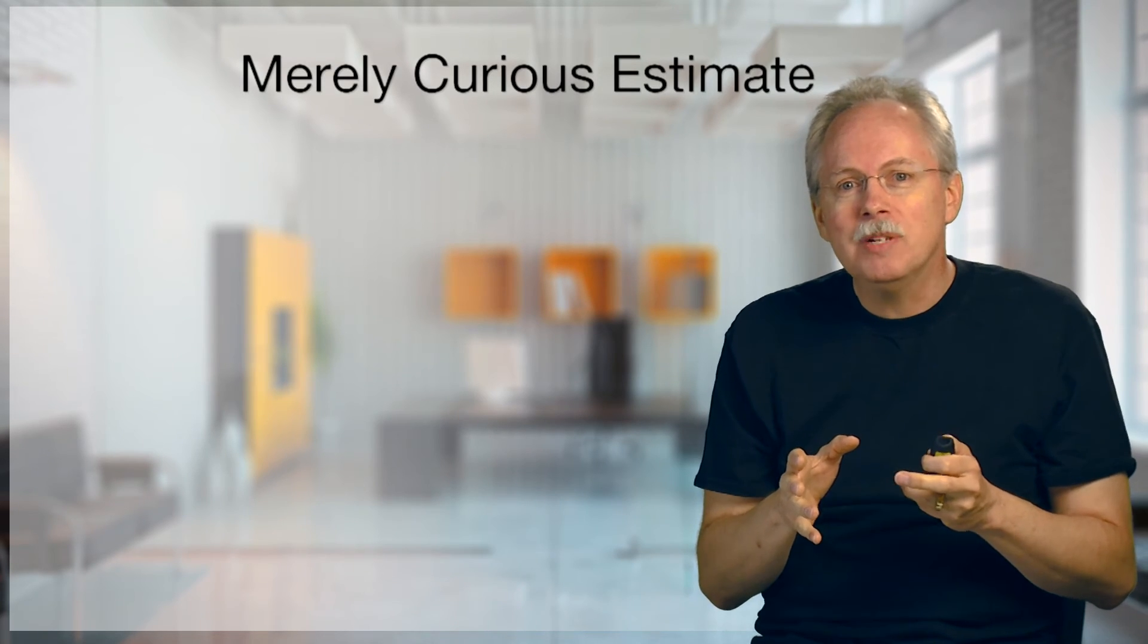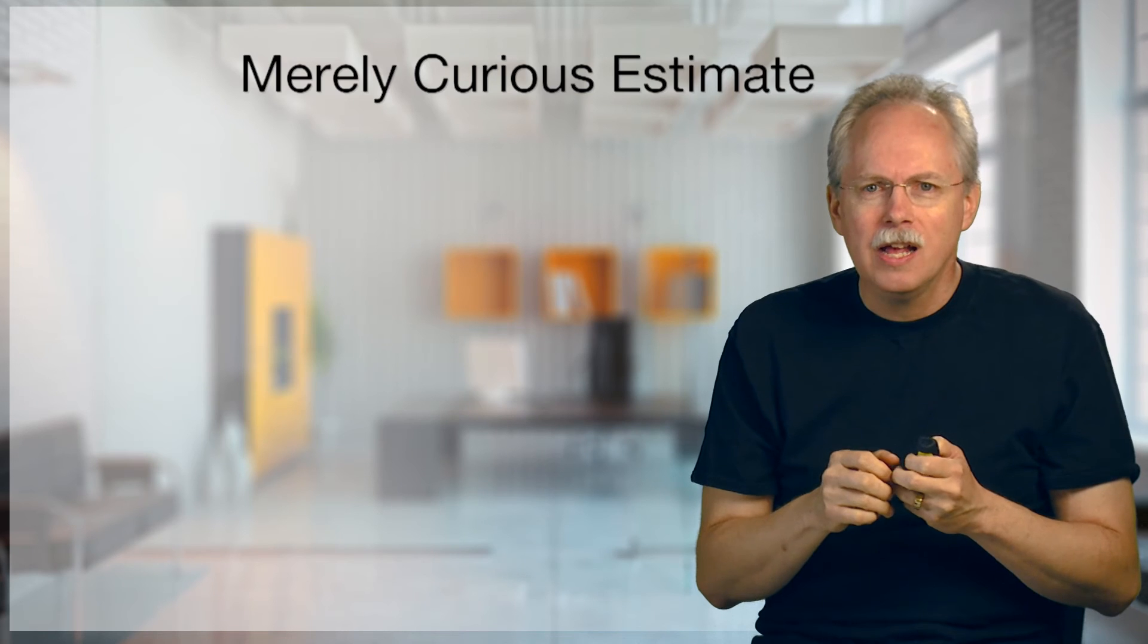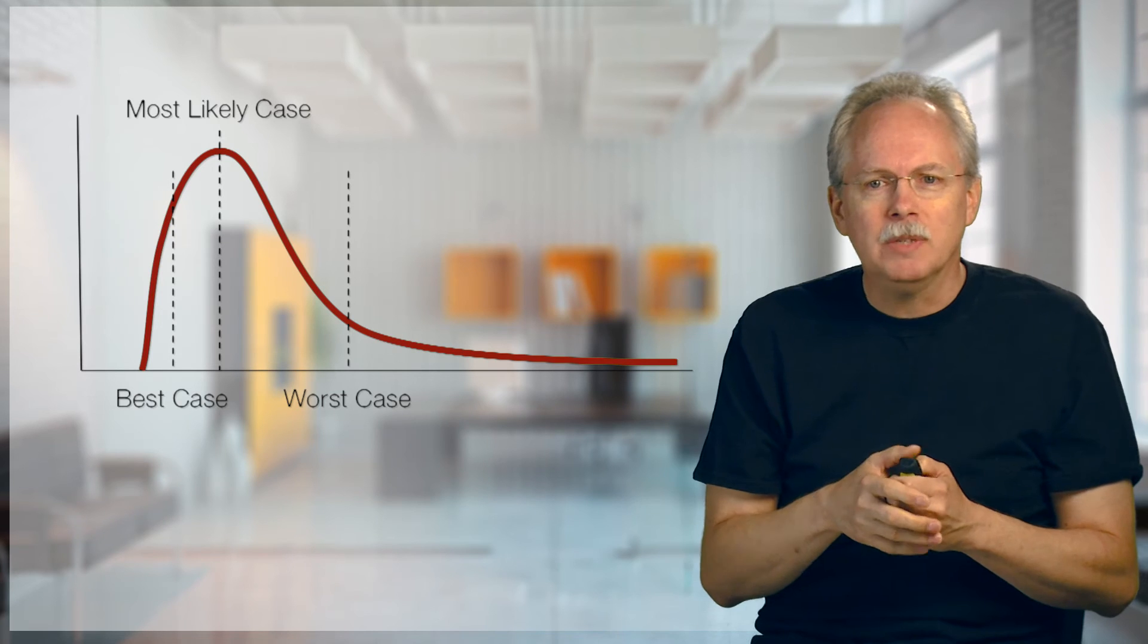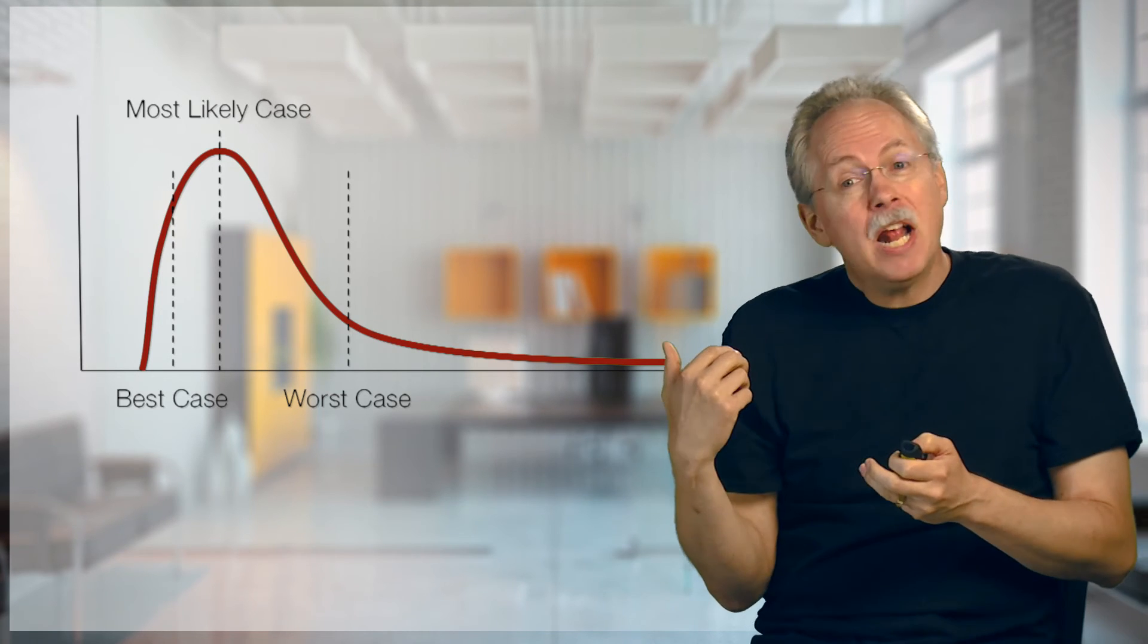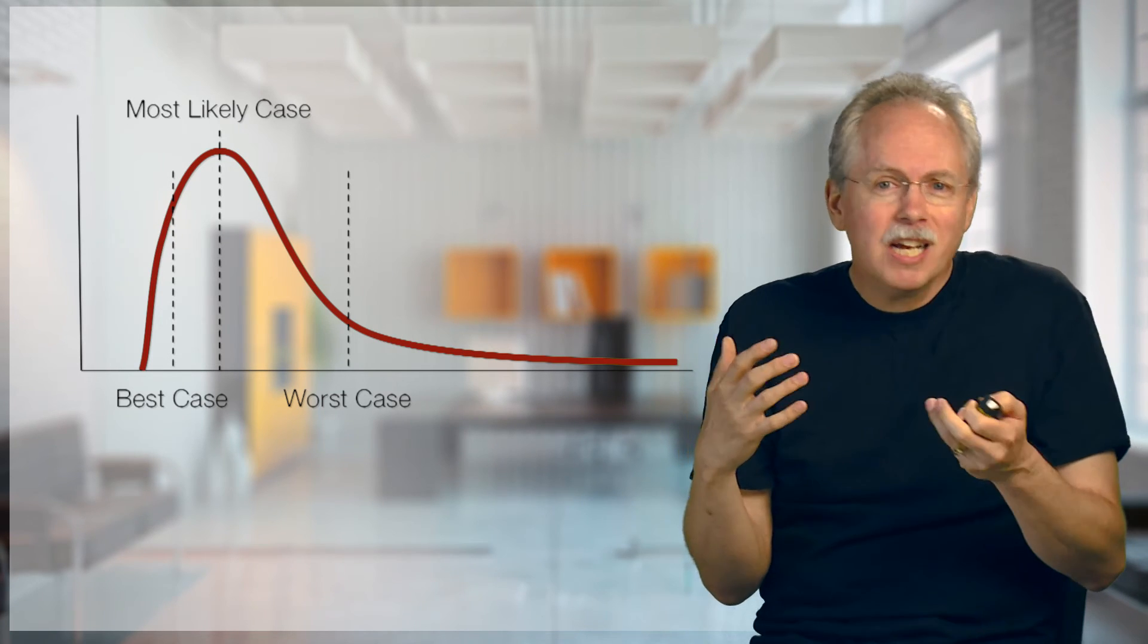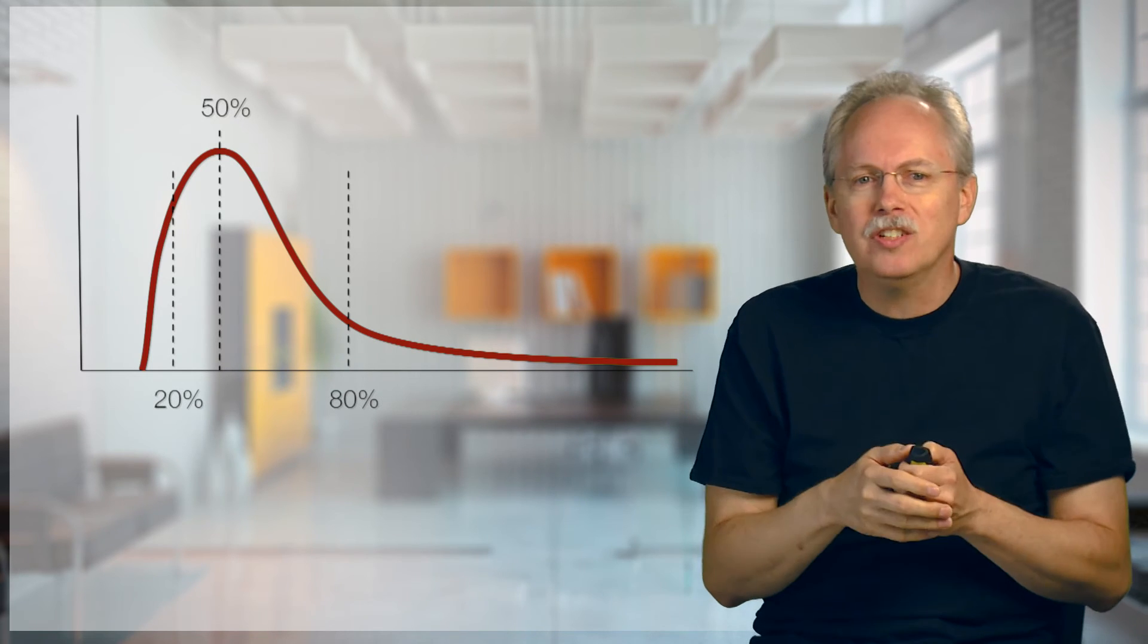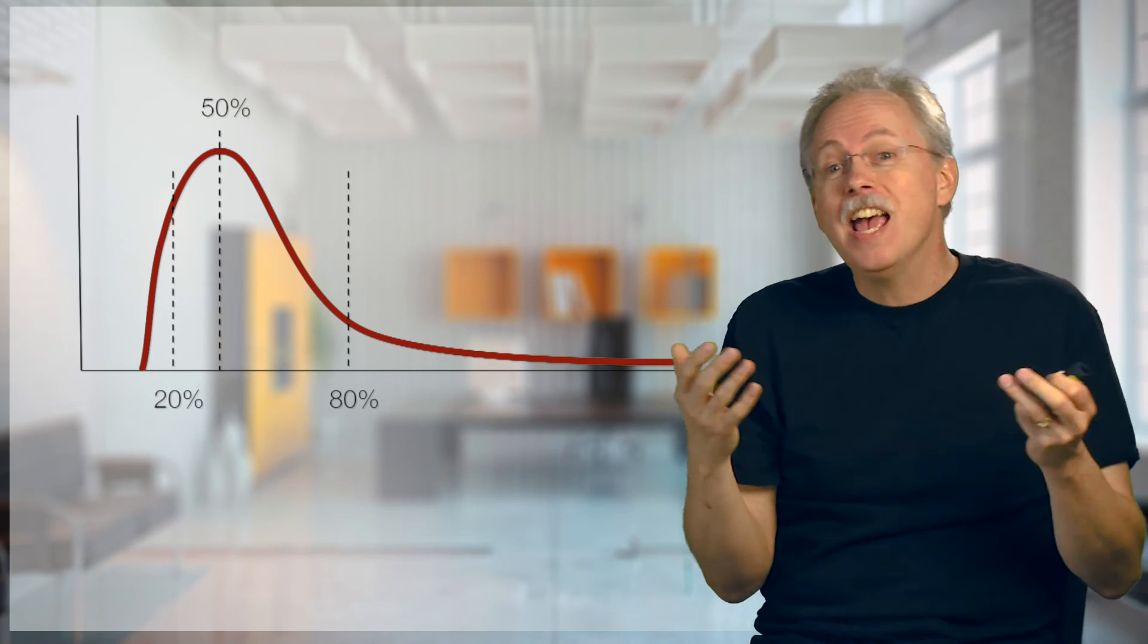My final type of estimate is my merely curious estimate. These are for your stakeholders who say, you know what? I'm just kind of curious. How big is it? Now, these people better be like angels, because you're going to do some work for them that really has no benefit besides solving their curiosity. So for these people, I tend to use the three-point estimate. Use all three. But I don't like to use these names, because these names carry a little bit too much baggage, so I switch them to these names. The 20, the 50, and the 80.